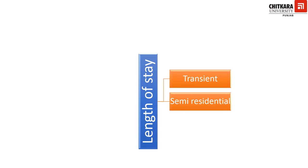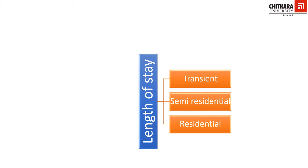Semi-residential hotels are generally patronized by people who are staying at a location. The duration of stay may range from a few days to weeks. They incorporate the features of both transient and residential hotels. The next category is residential hotels. As the name suggests, these hotels provide long-term stay to the guests. The duration of stay may range from several months to maybe a few years. A very common example is youth hostels; however, they may also be classified into alternate accommodation.